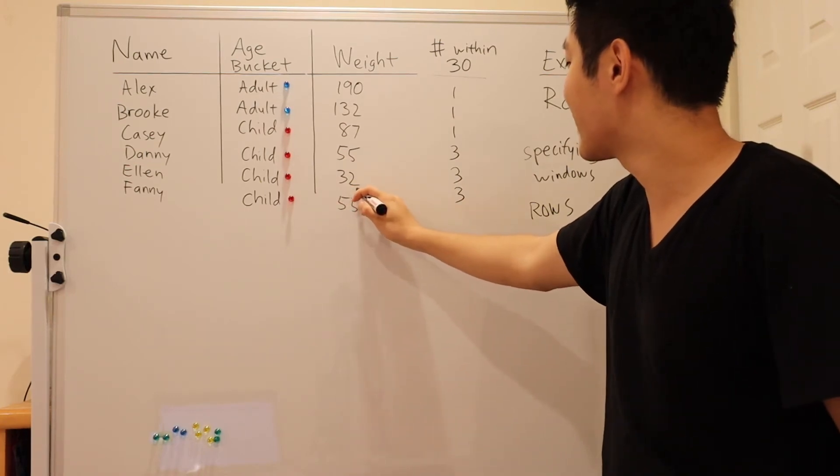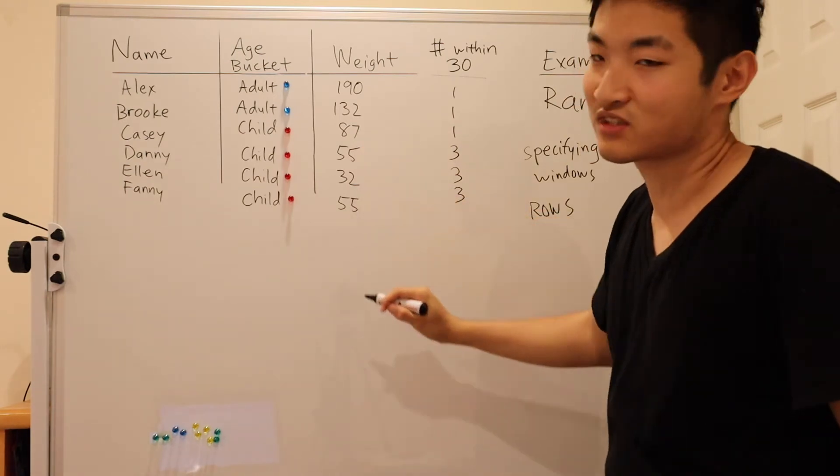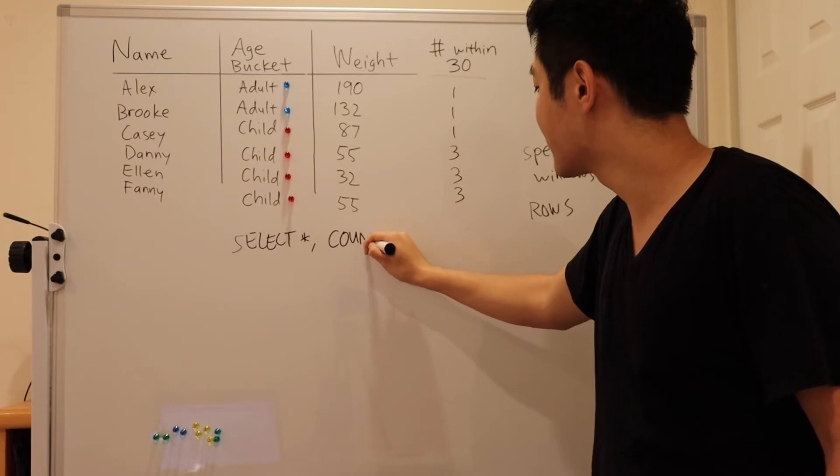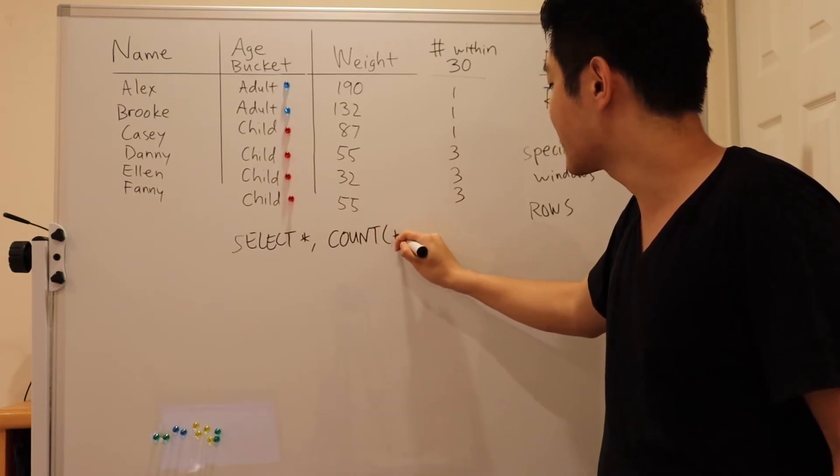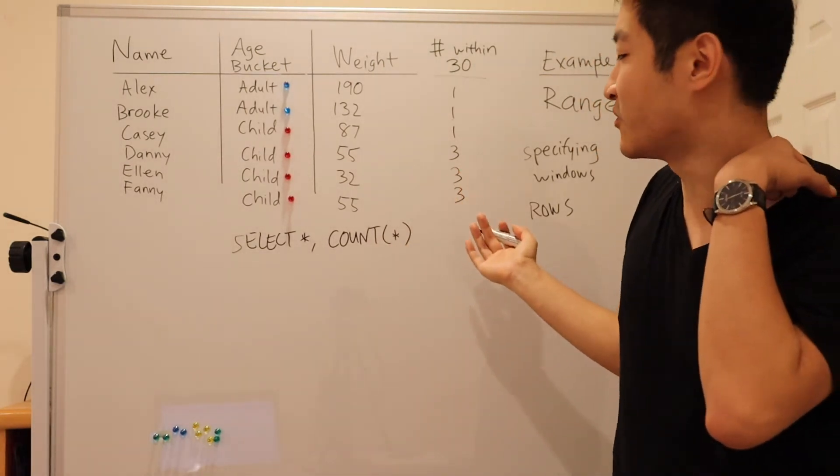So for Ellen, Ellen has two friends who are within 30 pounds of 32. So that's three. We're counting this time. And since we're counting rows, it doesn't really matter what we put in here, we can say star, we can say one.